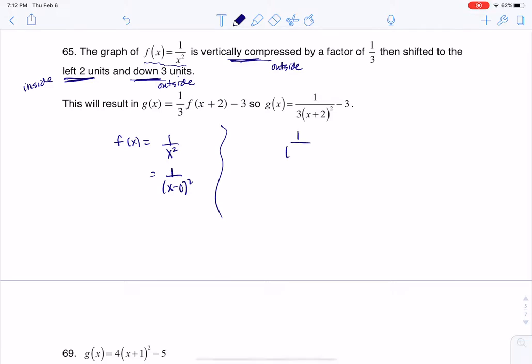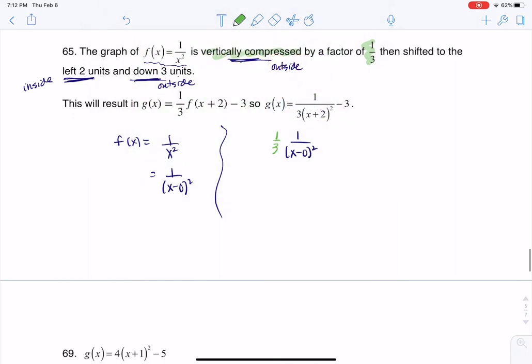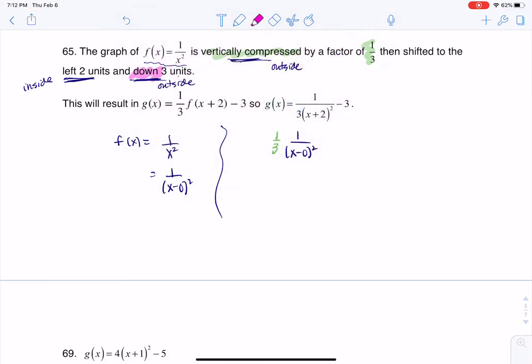Let me take this function that I have right here and start to mess with it. I'm going to do these one at a time. If I want to vertically compress by a factor of one third, that's going to have me multiply by one third outside of my grouping symbols. I've also been asked, let me put this in pink, to move down three units. That will happen outside of my grouping symbols, so I'm going to put a minus three right here.